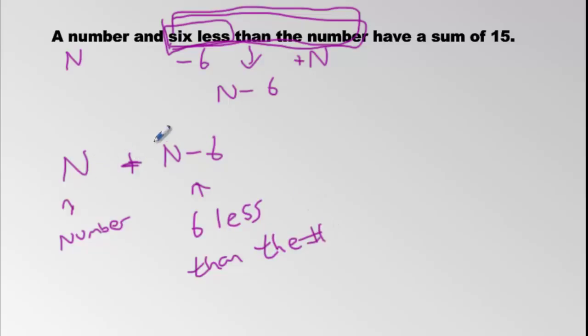And this here is 6 less than the number. And their sum, when you add them, this is what the plus sign is, is 15. Now look, this is good. We only have one type of letter. It's an N. But we have N plus N. How many N's is that? Two N's. So we have two N.